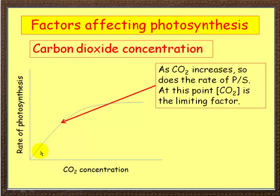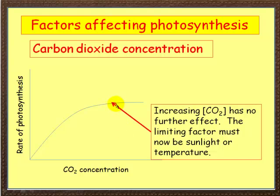So on that graph, as photosynthesis increases, it's limited by carbon dioxide until this point is reached. From this point onwards, it doesn't matter how much you increase the concentration of carbon dioxide — it has no further effect on the rate of photosynthesis. So now the limiting factor isn't carbon dioxide; it must be either light or temperature.